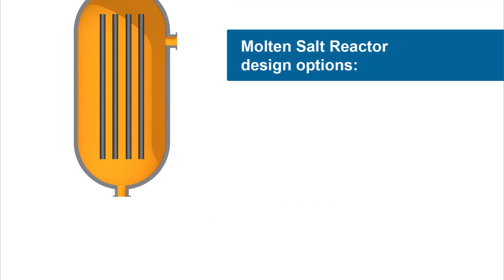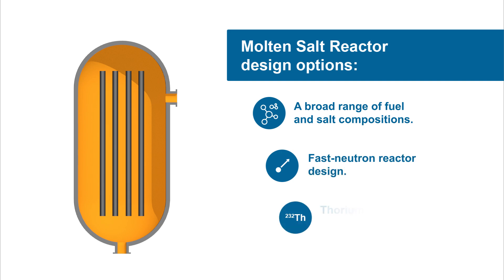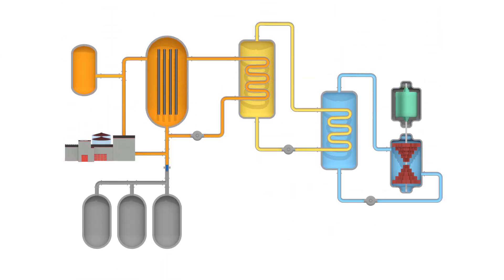Other designs include liquid or solid fuel contained in rods similar to current reactors, but with molten salt as a coolant. These reactors can use a broad range of fuel and salt compositions, and there are even designs that do not require a moderator at all — a class called fast reactors. Several designs would employ thorium fuel, which offers many benefits. There is at least three times more thorium than uranium on the planet, and its waste largely decays in hundreds of years instead of tens of thousands.